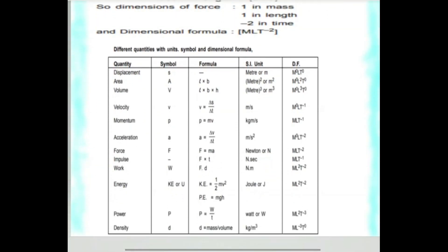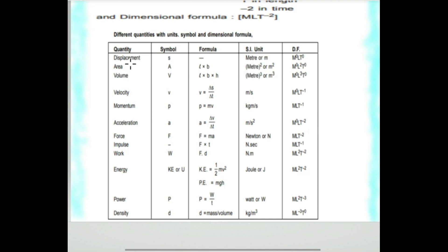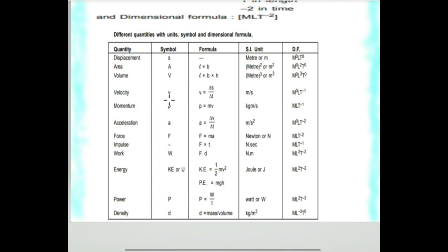Different physical quantities and their dimensions: displacement is measured in meters, represented as L. Area equals length into breadth, unit meter squared, dimension L². Volume is meter cubed, L³. Velocity equals distance upon time, meter per second, dimension LT to the power minus 1.